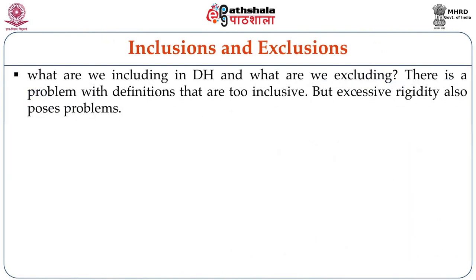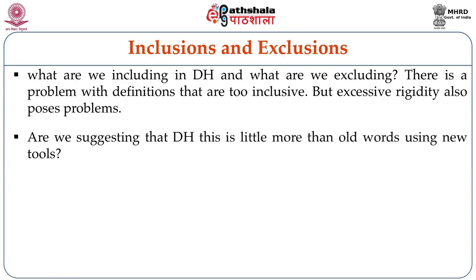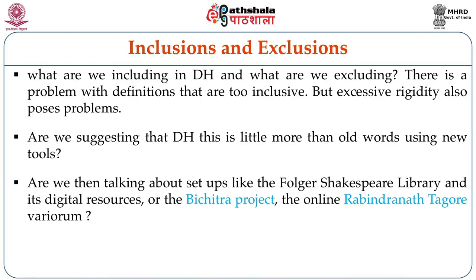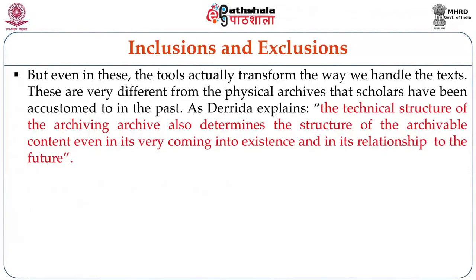So here we move on to the question of inclusions and exclusions. What are we including in DH? What are we excluding? There is a problem with definitions that are too inclusive, but excessive rigidity also poses problems. Are we suggesting that DH is little more than old words using new tools when we are talking about Google Books or Project Gutenberg? Are we then talking about setups like the Folger Shakespeare Library and its digital resources or the Bichitra Project, the online Rabindranath Tagore variorum? But even in these, the tools actually transform the way we handle the texts. These are very different from the physical archives that scholars have been accustomed to in the past.